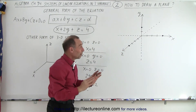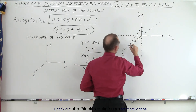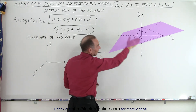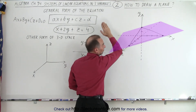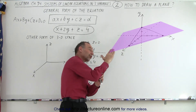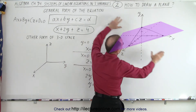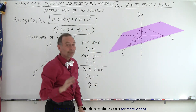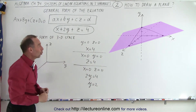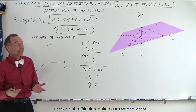Now, remember, that's in three-dimensional space with z pointing outward. When we connect those three dots — connecting them like this, this, and this — you can see that we have a plane that slices through the y-axis, through the x-axis, and through the z-axis. It's a plane tilted at an angle cutting through all three axes. If you imagine it going outward infinitely, we have a representation of the plane in three-dimensional space for that equation. A linear equation in three variables represents a plane in three-dimensional space — and that is how it's drawn.